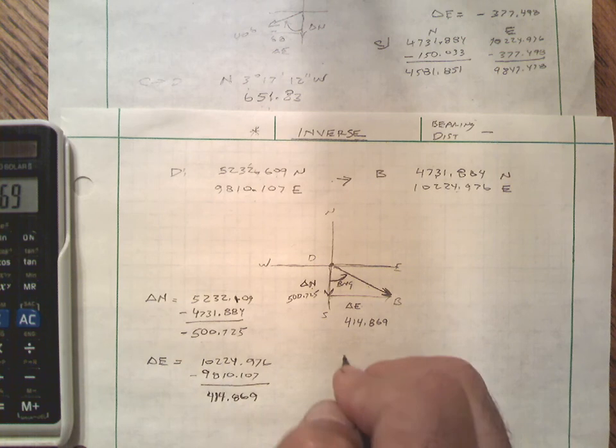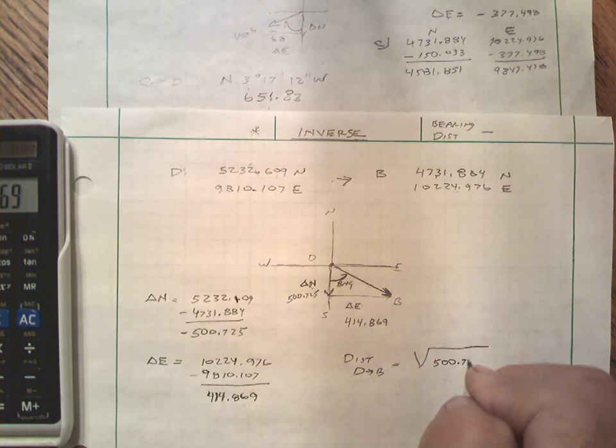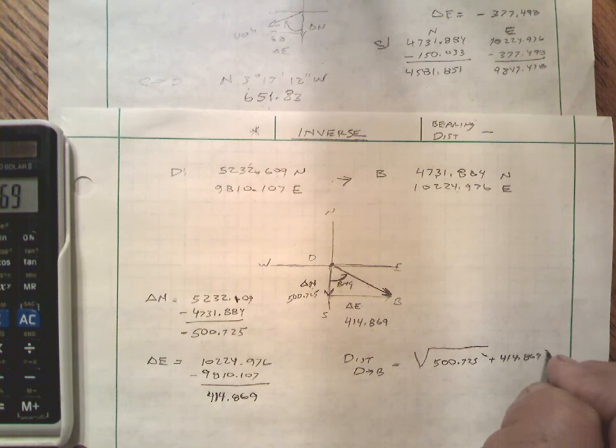So we can then find simply the distance between D to B by simply squaring those components. Putting that in, for example... now someone is going to say, 'George, that's a negative.' And indeed that is.